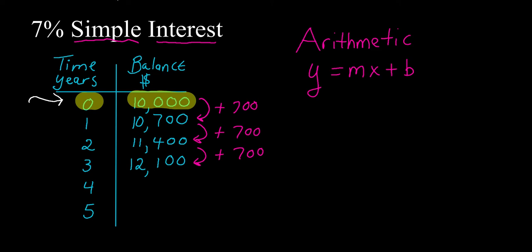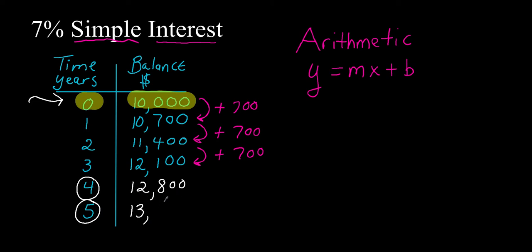Go ahead and pause the video and tell me the end-of-year balance for year four and year five. Hopefully you got twelve thousand eight hundred, because twelve thousand one hundred plus seven hundred is twelve thousand eight hundred, and then adding seven hundred to twelve thousand eight hundred gives you thirteen thousand five hundred.